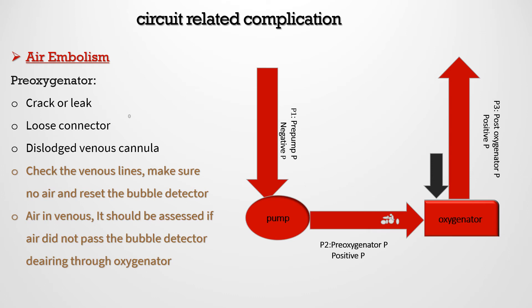Another ECMO circuit complication is air embolism, one of the most life-threatening complications. If air is detected inside the circuit, clamp the return line immediately. Pre-oxygenator air may be due to improper priming, a leak or crack in the circuit, loose connections between the venous cannula and circuit tubing, or malposition of the venous cannula. Check the venous line, ensure there is no air, and reset the bubble detector. If a small amount of air is present in the venous line and has not passed the bubble detector, it can be aspirated from the pre-oxygenator port and de-aired through the oxygenator.